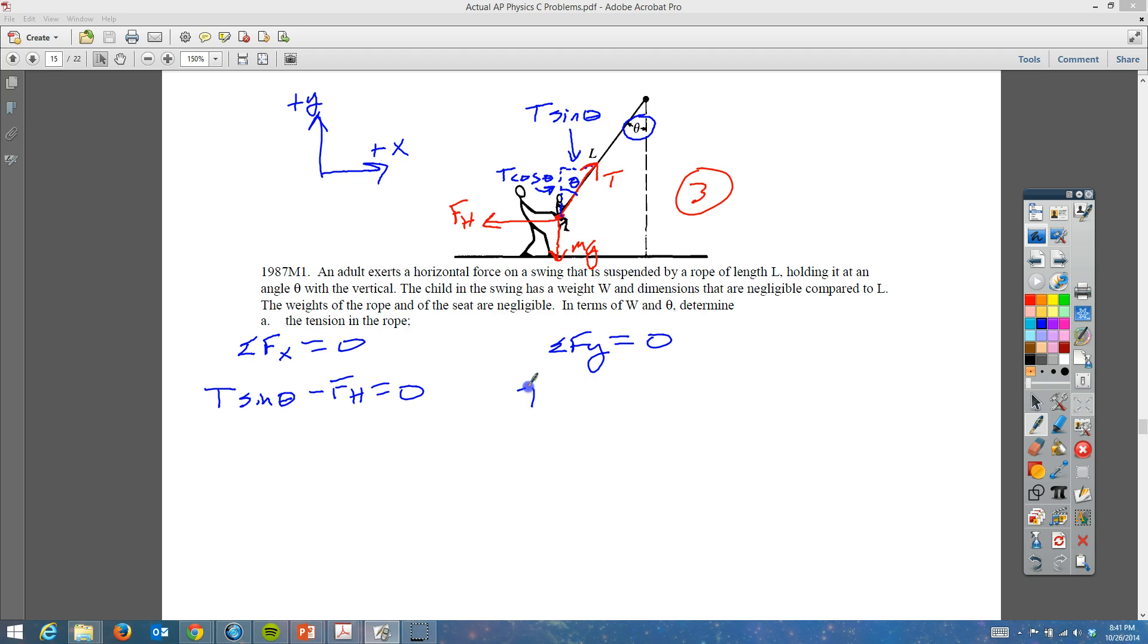And in the Y's we have T cosine of the angle minus MG is equal to zero. So they really just want us to find the tension in the rope. MG here is W. And because they want it in terms of W and the angle, we can't use this equation. Instead, we're going to use this equation. So we're going to say this is really T cosine of the angle minus W is equal to zero. So T cosine of the angle is equal to W. So this would be T is equal to W over the cosine of the angle.